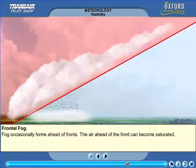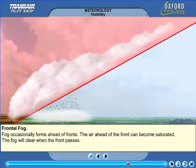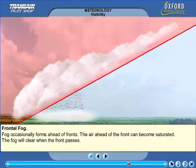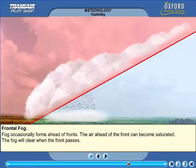Frontal fog forms just ahead of some warm and occluded frontal systems. The evaporation of the water into this cooler air causes it to reach saturation and form fog. The belt of frontal fog can extend as much as 200 miles ahead of the front itself. The fog will clear once the front has passed.